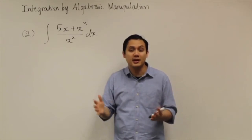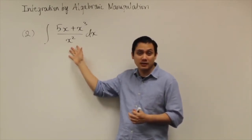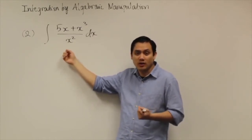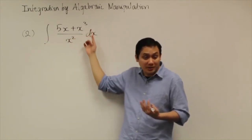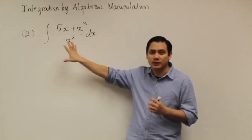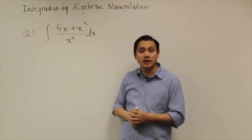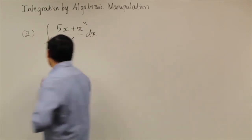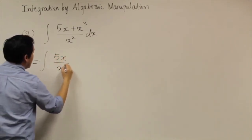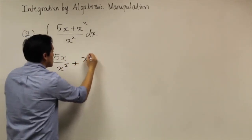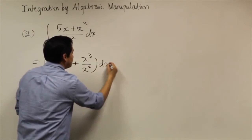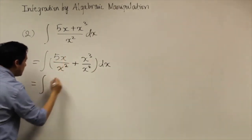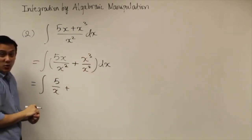In the substitution method, usually the denominator is the inside function. But for this particular problem, when you look at the denominator x squared, taking its derivative gives you nothing related to the numerator 5x plus x cubed dx. So for this problem, when you look at it carefully, you can simplify this fraction into something easier to work with — that is, you can separate it into two different fractions: 5x divided by x squared, plus x cubed divided by x squared. Simplifying: 5x over x squared gives 5 over x, and x cubed over x squared gives just x.